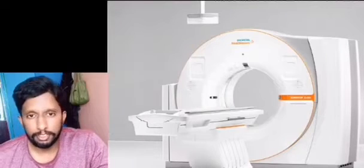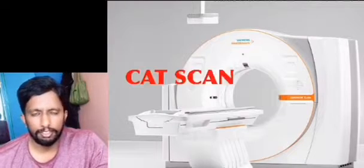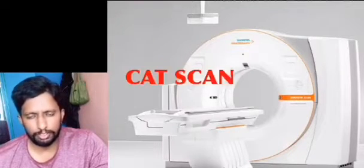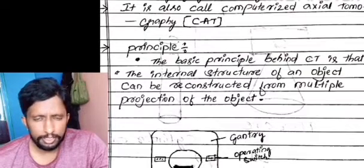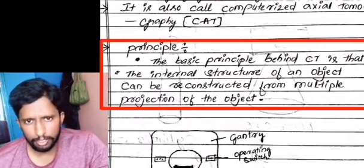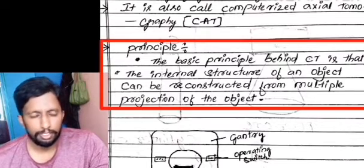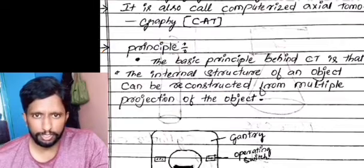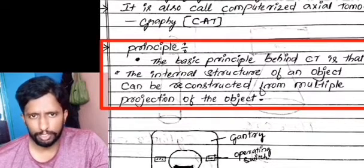CT scan is used in many cases. The basic principle of CT scan is that the internal structure of the body can be reconstructed from multiple projections. X-ray images are used for this purpose.